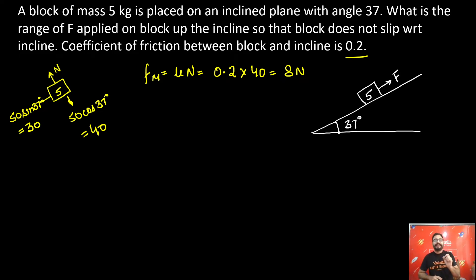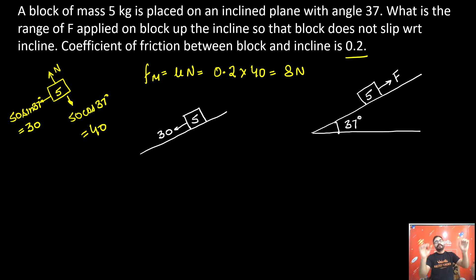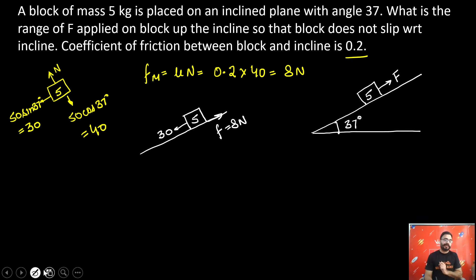Let us suppose we do not apply any capital F and see what happens. The 30 newton force, which is mg sin 37, will try to move the block downwards. Friction acts upwards trying to stop it, with a maximum value of 8 newtons. But there is still a net force of 22 newtons downward, so the block does not stop. We have to apply some external force.